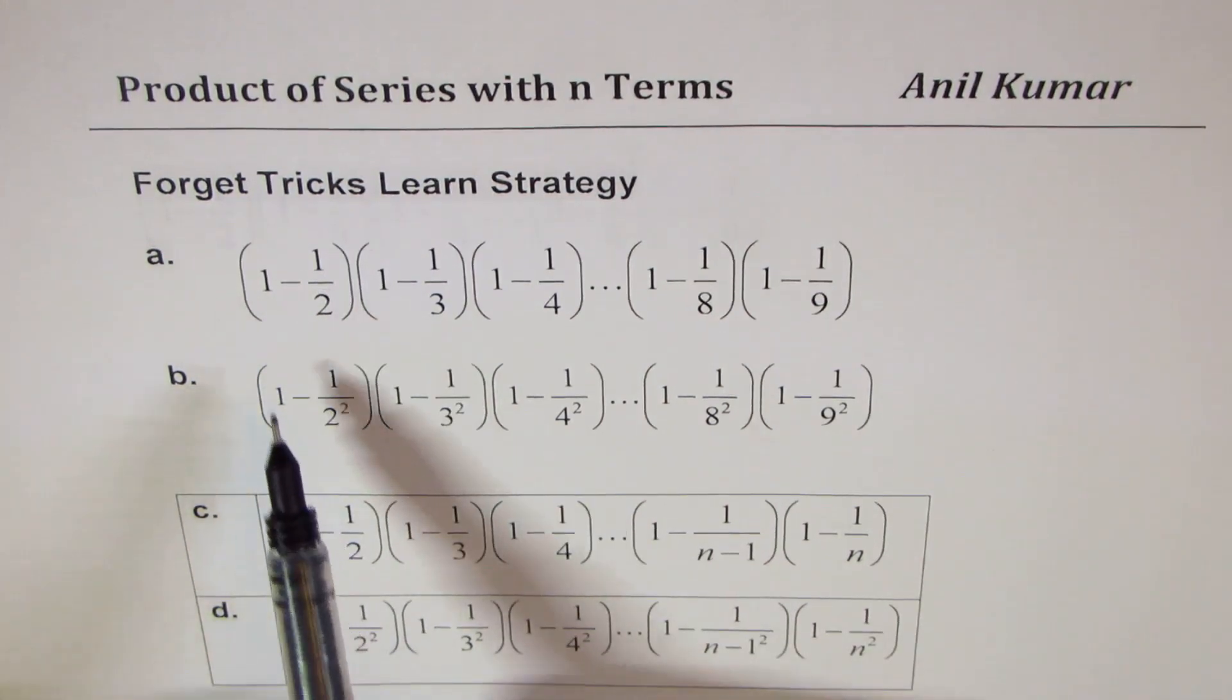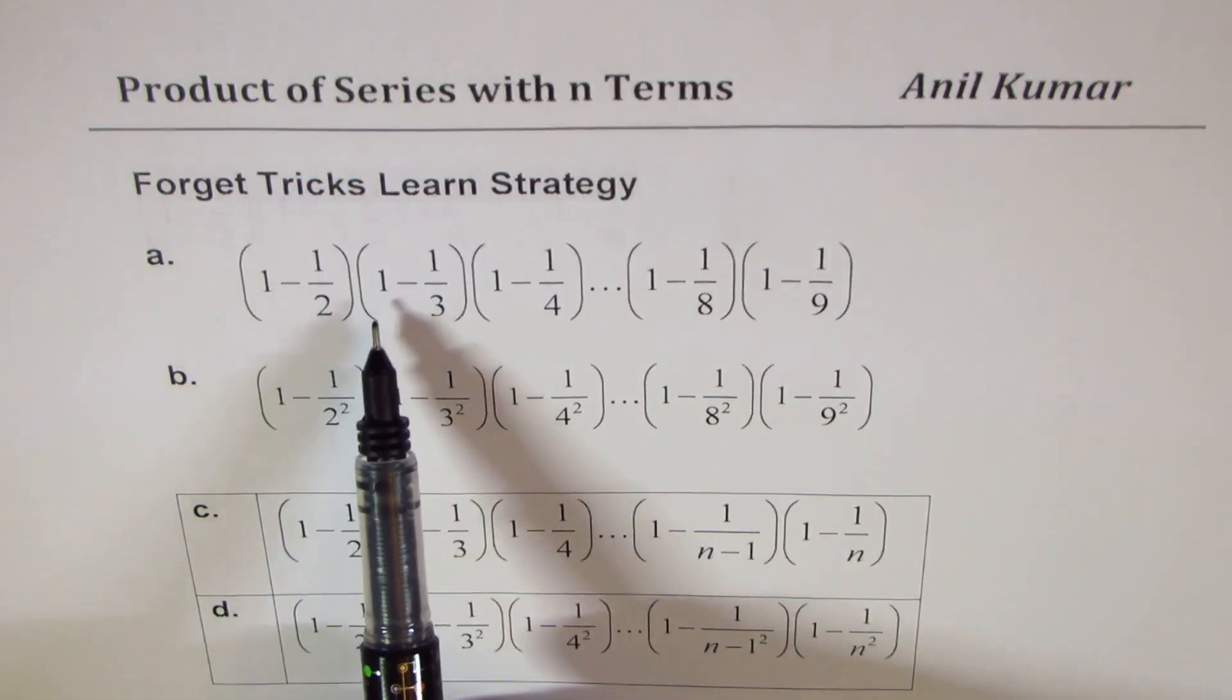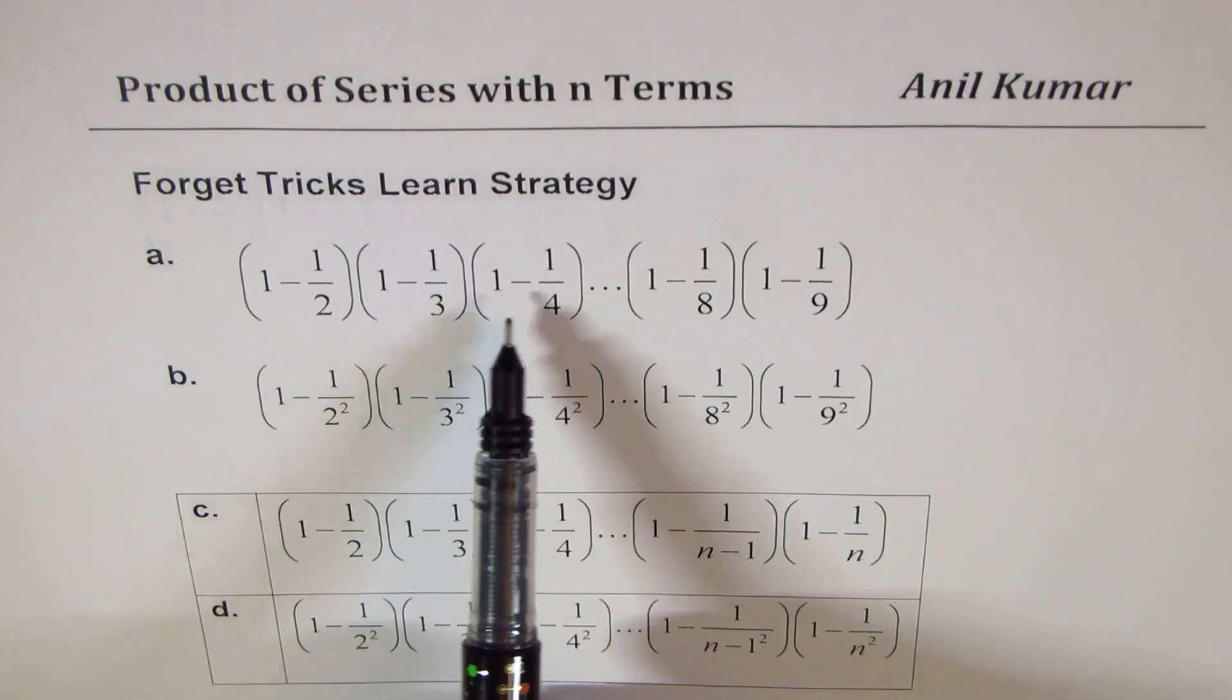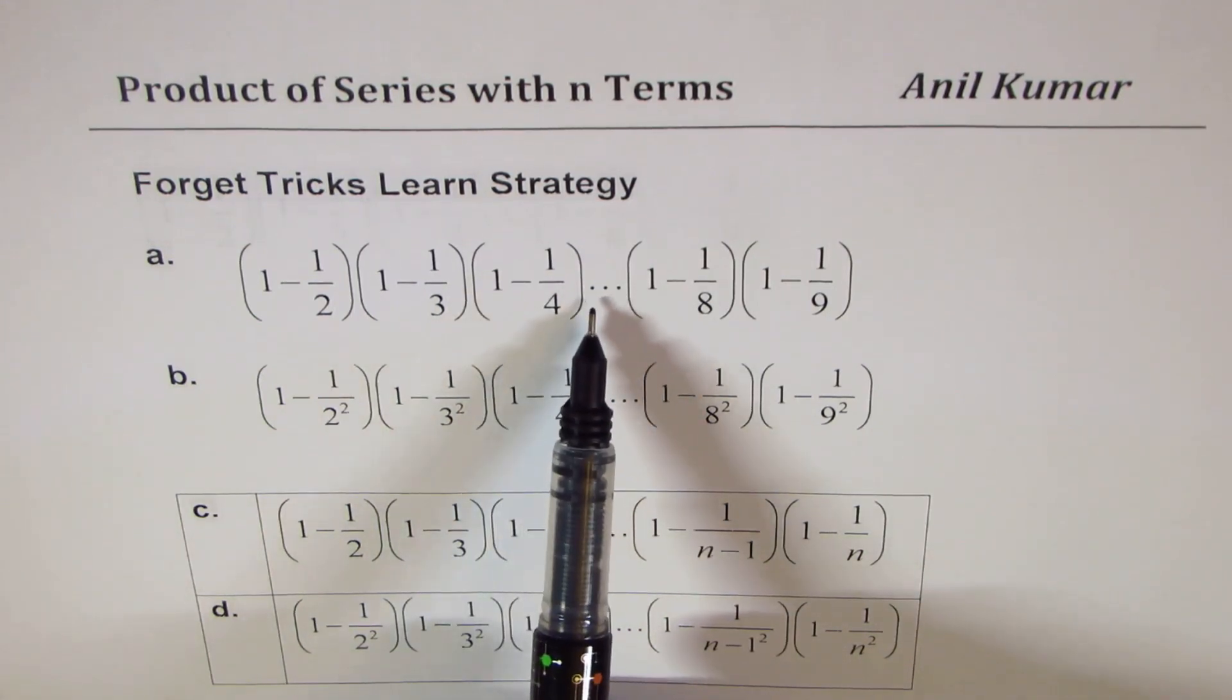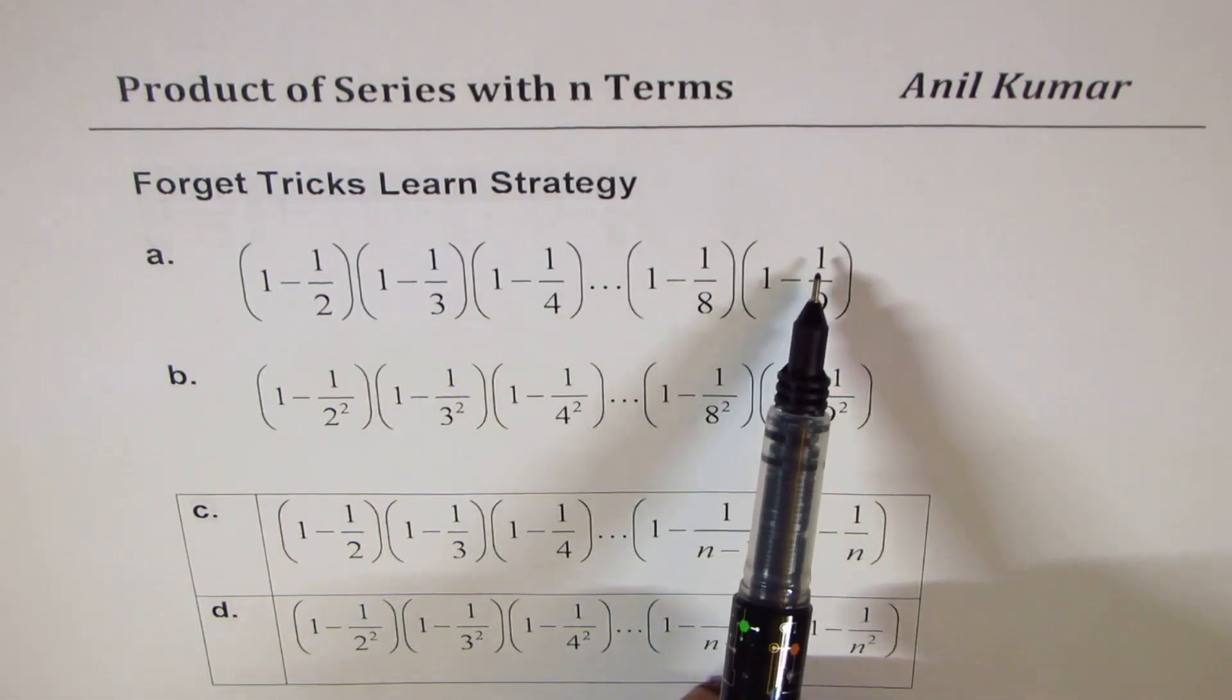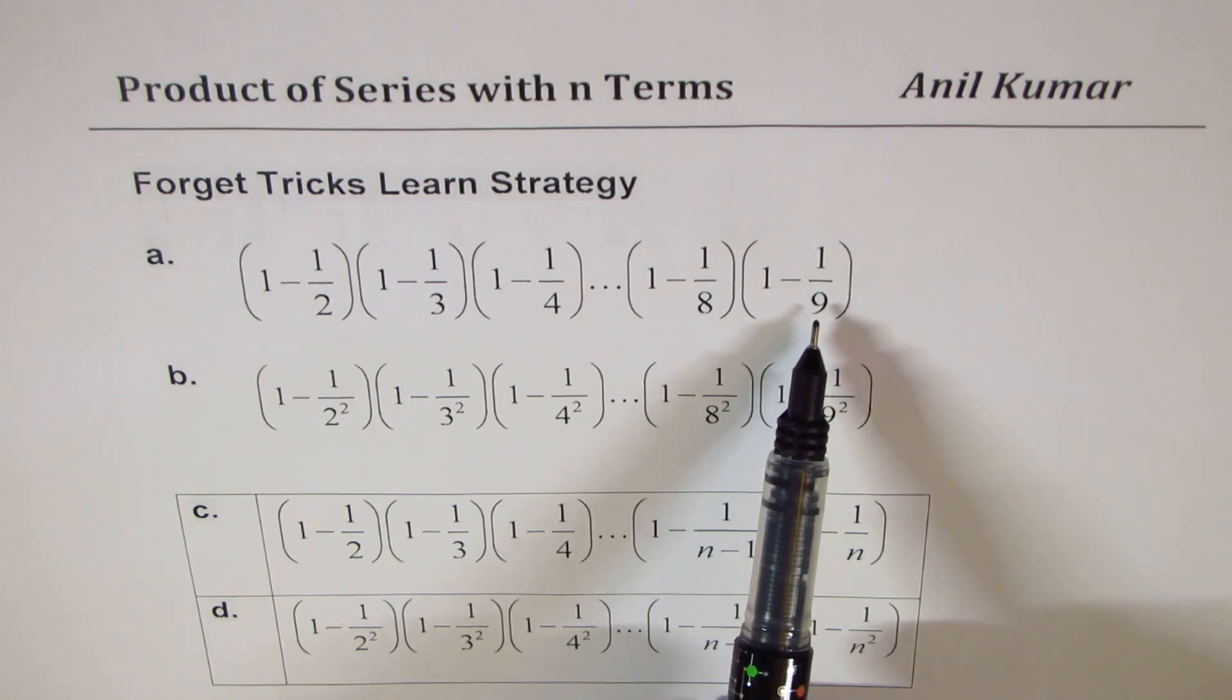So we have two questions here, which is 1 minus half times 1 minus 1 over 3 times 1 minus 1 over 4, like this, till 1 minus 1 over 9.